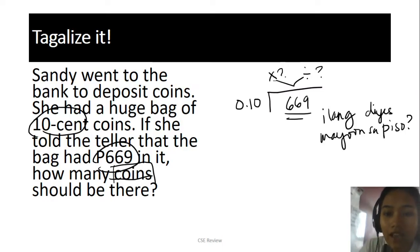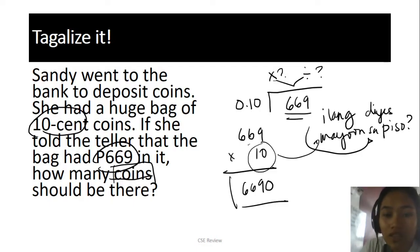Now, she has 669 pesos. So what do you need to do? Do you need to divide? Or just multiply 669 by 10? Why 10? Because there are 10 ten-cent coins in one peso. If you have 669 pesos, that means each of those pesos has 10 coins. So 669 times 10—isn't that easier? Because 669 times 10 is just adding a zero at the end. The answer becomes 6,690. We didn't even do heavy math. Now even if you solve 669 divided by 0.10, you'll get the same answer: 6,690. We just made life easier.